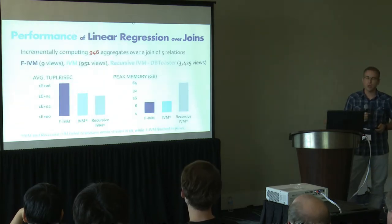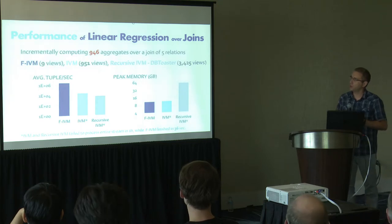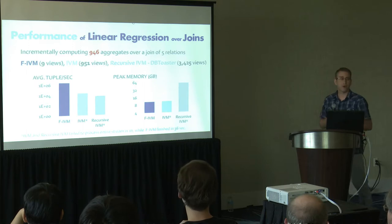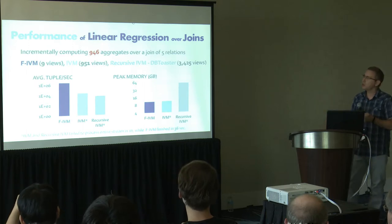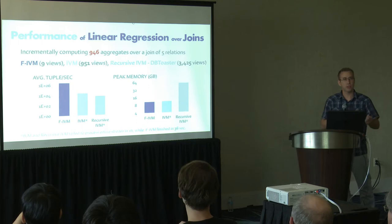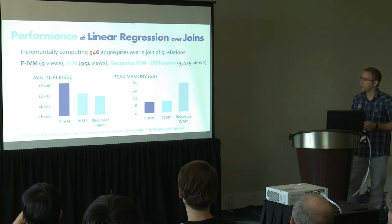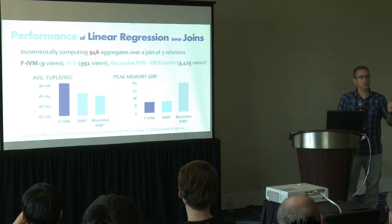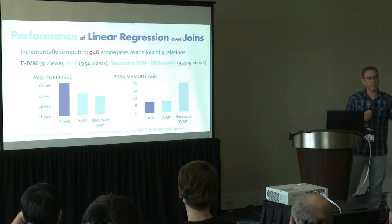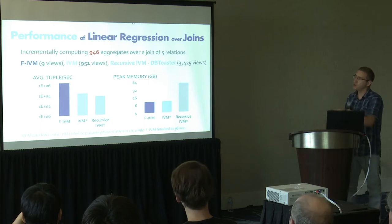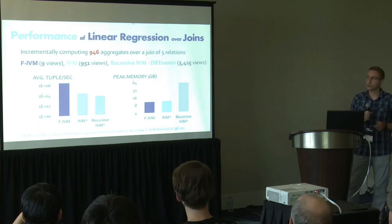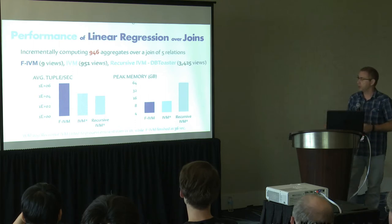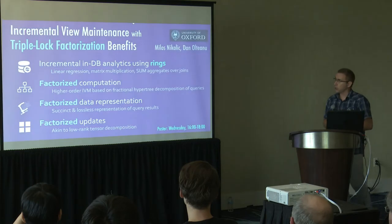As for performance, we compared three incremental strategies — FIVM, classical IVM, and recursive IVM as used in DBToaster — to incrementally compute roughly 1,000 aggregates over a string dataset with five relations. FIVM materializes only nine views, because it uses non-scalar compound aggregates. This translates into up to two orders of magnitude better performance compared to other systems, and also gives the lowest memory consumption compared to IVM and recursive IVM.